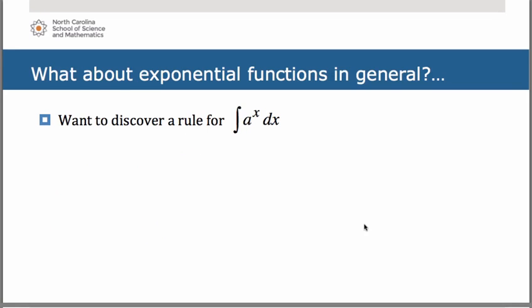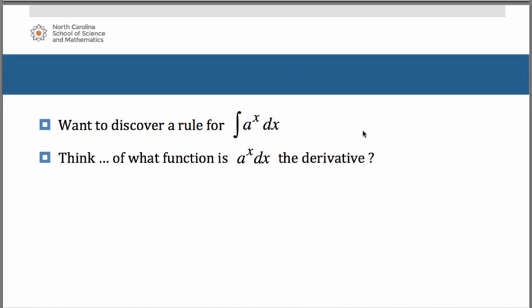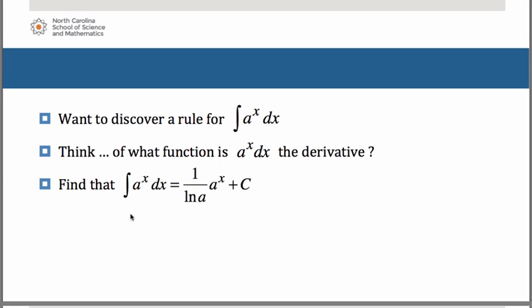What about exponential functions in general? If we want to discover a rule for the anti-derivative of a to the x dx, where a is a number, we find that the anti-derivative of a to the x dx is 1 over the natural log of a times a to the x plus c. This is the third rule you need to memorize.